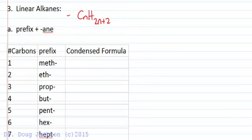For example, if we have methane, that would be one carbon, and then two times one is two plus two, CH4. And so then ethane would then be C2H6. Propane would then be C3, three times two is six plus two is eight, and you get the idea. Just keep going with that. And so again, prefix plus ane.